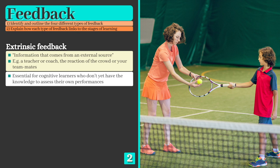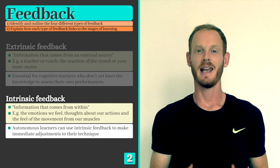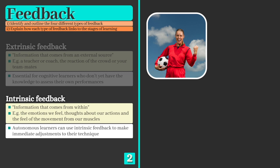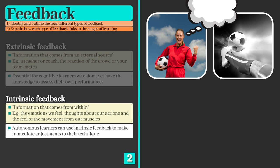Intrinsic feedback, on the other hand, is information that comes from within. The emotions we feel, thoughts about our actions, and the feel of movement derived from our muscles all give us useful information. Experienced performers in the autonomous stage of learning can use this information to self-analyse and make immediate adjustments.